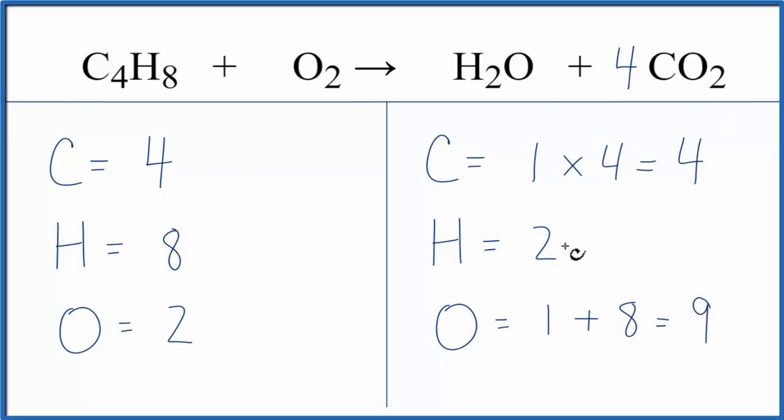Next, since we have 2 hydrogens here and 8 here, let's try to get this balanced. If we put a coefficient of 4 here for the hydrogens, 2 times 4, that gives us 8. And then let's update our oxygens here.